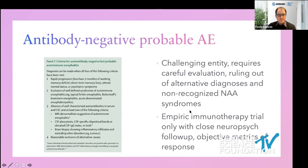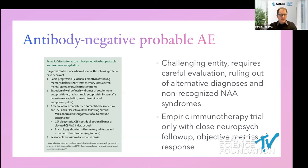Antibody-negative autoimmune encephalitis has created considerable concern and frustration when patients are labeled without going through the complete prior workup. One has to be very careful diagnosing it. Sometimes these patients are given steroids or empiric immunotherapy, feel a little better, and then it's assumed they have the condition — but there may be no objective readout confirming improvement. If empiric immunotherapy is given, it should only be done with very close neuropsychological follow-up and objective metrics of response.